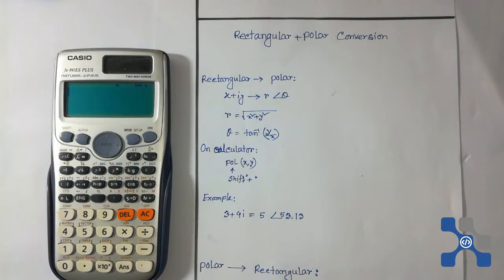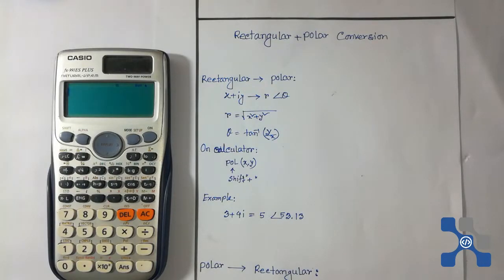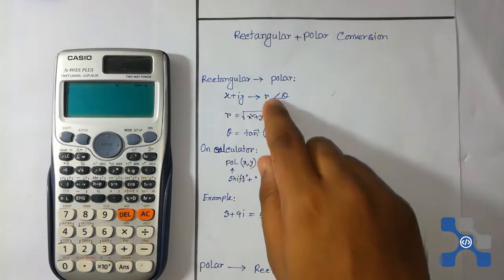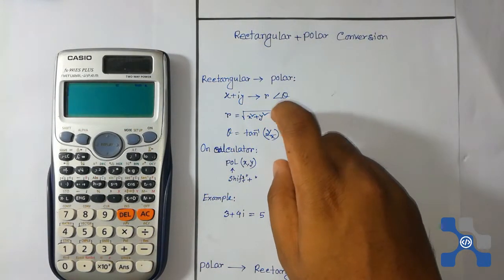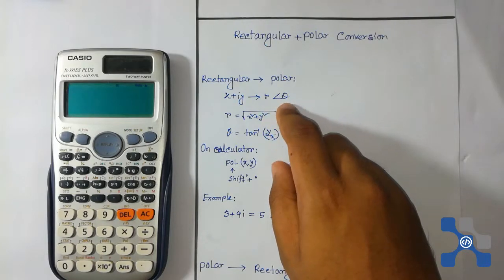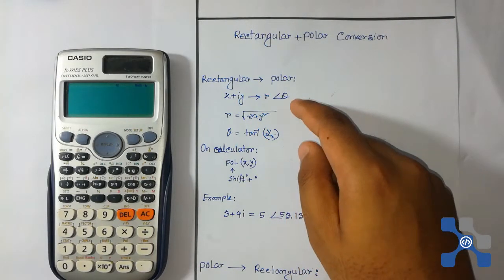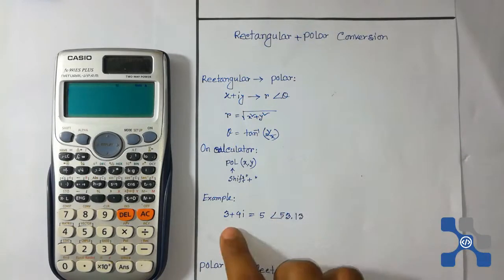In this video I am going to show you how to convert rectangular form to polar form. It is very easy to do this with this calculator. This is a rectangular form and this is polar form, where r is the radius and theta is the angle.